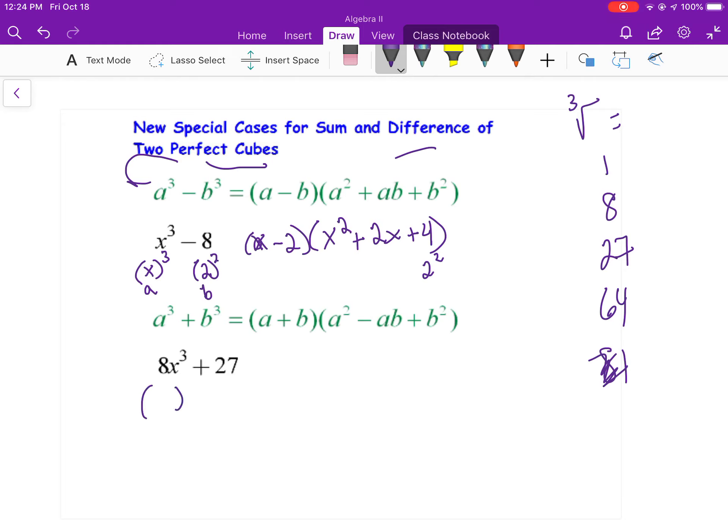Okay? If it is the sum, 3 to the third is 27. 2x to the third gives you x to the third. So this whole thing, both of these would be your a and your b. So it's 2x plus 3, it's 2x to the second power, minus 2x times your 3, and 3 squared. So 2x plus 3, 4x squared, minus 6x plus 9.